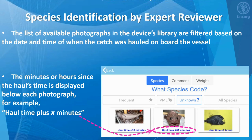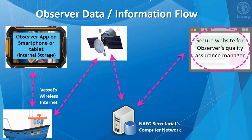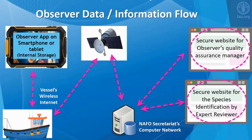When a photo is selected, a copy of the photo is created and then the file size is significantly reduced with a file compression library. When the observer's device detects internet connectivity with the vessel, the catches and associated photos are uploaded to the NAFO Secretariat's computer network. The NAFO Secretariat will provide a secure website for the observer's quality assurance manager. This website is out of scope for this presentation.